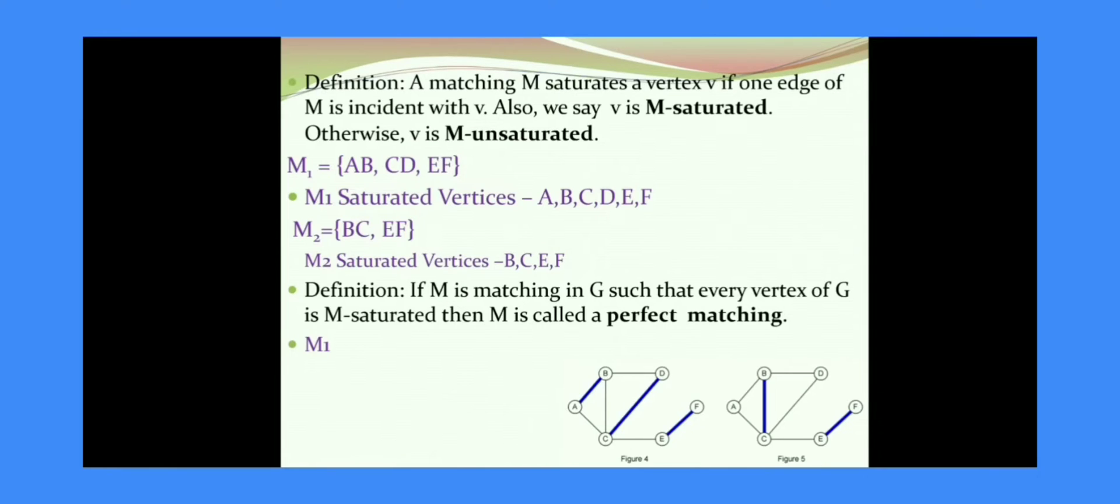The next definition is perfect matching. When is a matching said to be perfect? If all the vertices of G are M-saturated, then M is called a perfect matching. Among the two matchings that we have done, which matching is said to be perfect matching? M1 is said to be perfect matching because that matching contains all the vertices AB, CD, and EF.